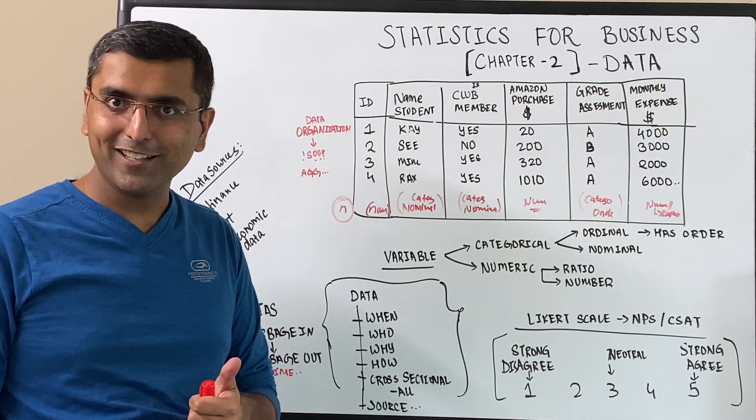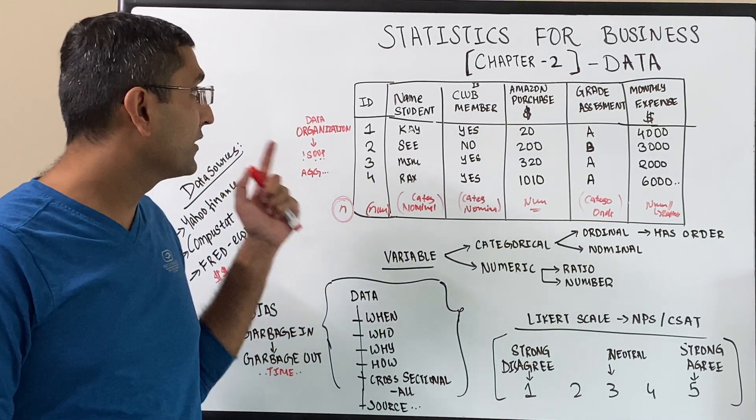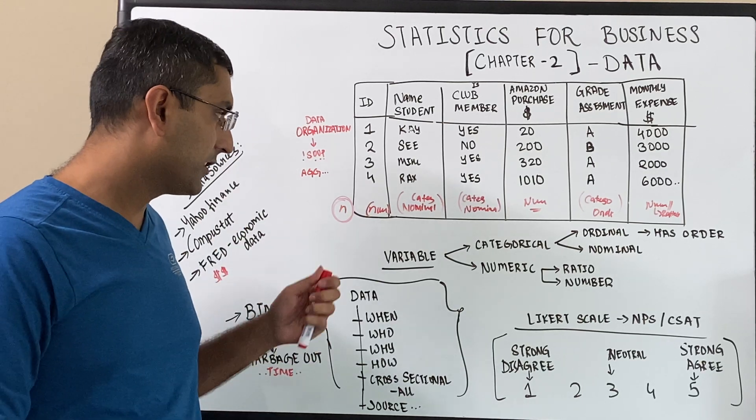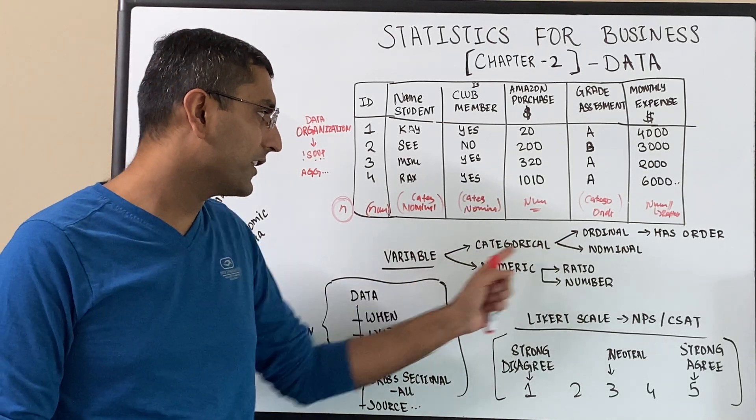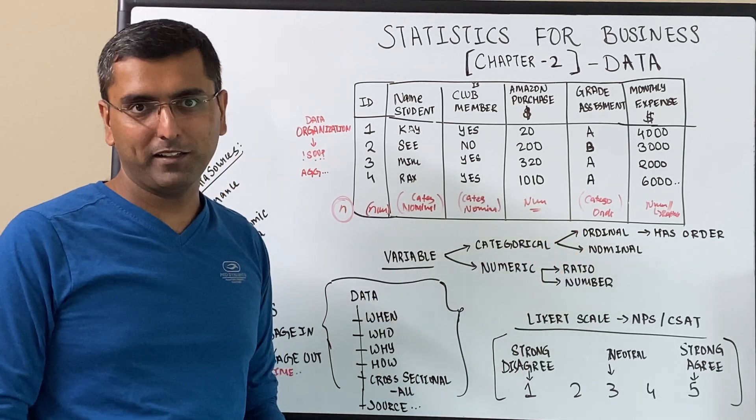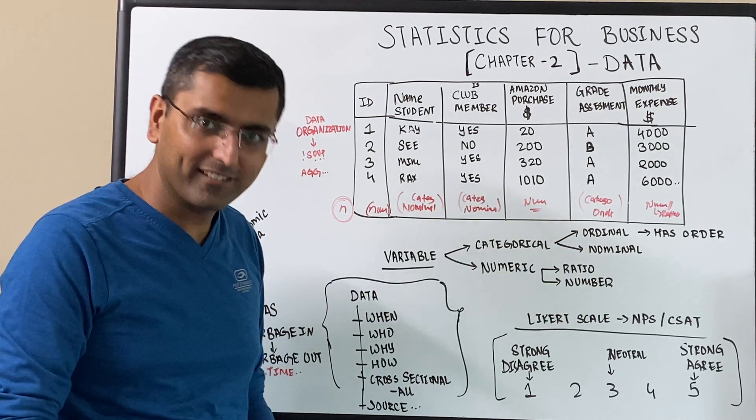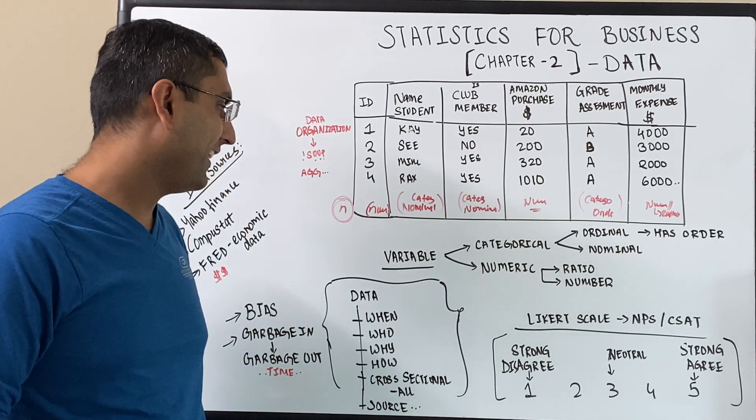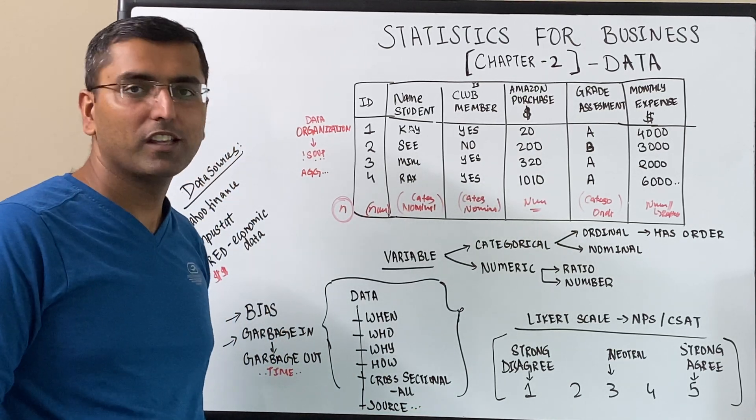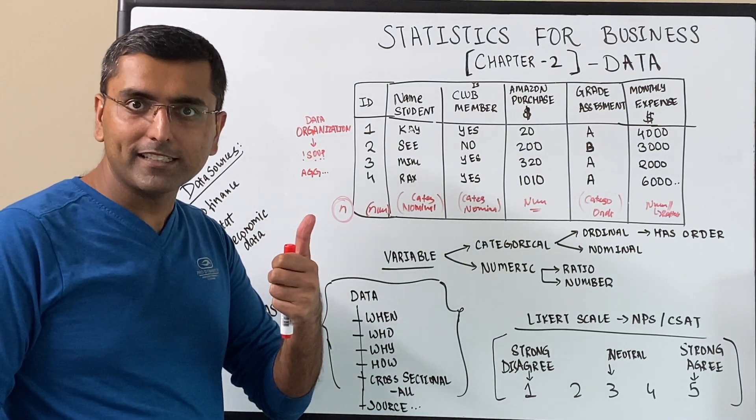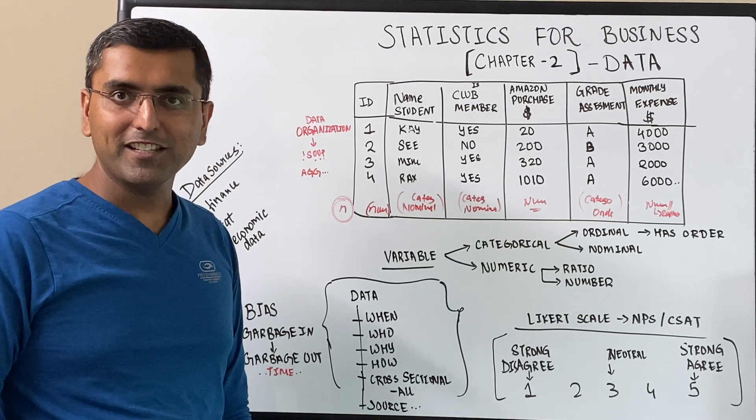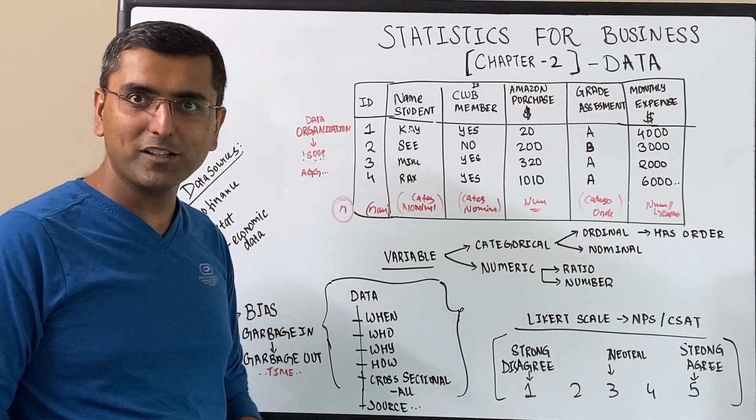So we learned a lot of things today. Variables, we learned about variables. We learned about organization, we learned about categorical. The biggest new learning for me was that there's this ordinal variable and nominal variable. Ordinal, order. Nominal, there's no order. It's a categorical. And what kind of variable, what data you use? Very important. So in the next few chapters, we'll go straight into categorical and numerical and understand more. Stay tuned for the next one.